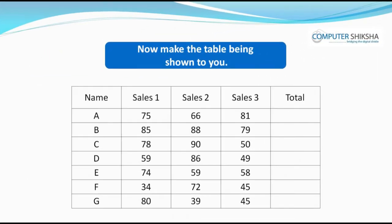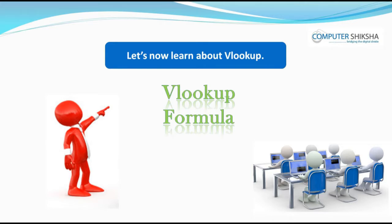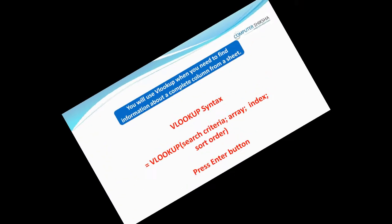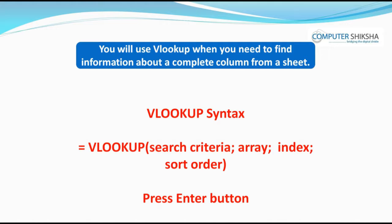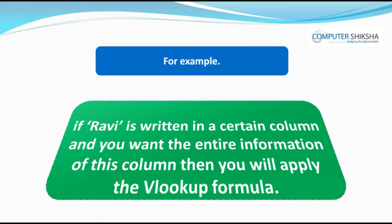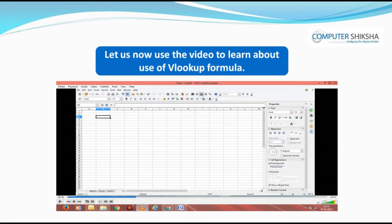Now, make the table being shown to you. Let us now learn about VLOOKUP. You will use VLOOKUP when you need to find information about a complete column from a sheet. For example, if a name is written in a certain column and you want the entire information of that column, then you will apply the VLOOKUP formula. Let us now use the video to learn about the use of the VLOOKUP formula.